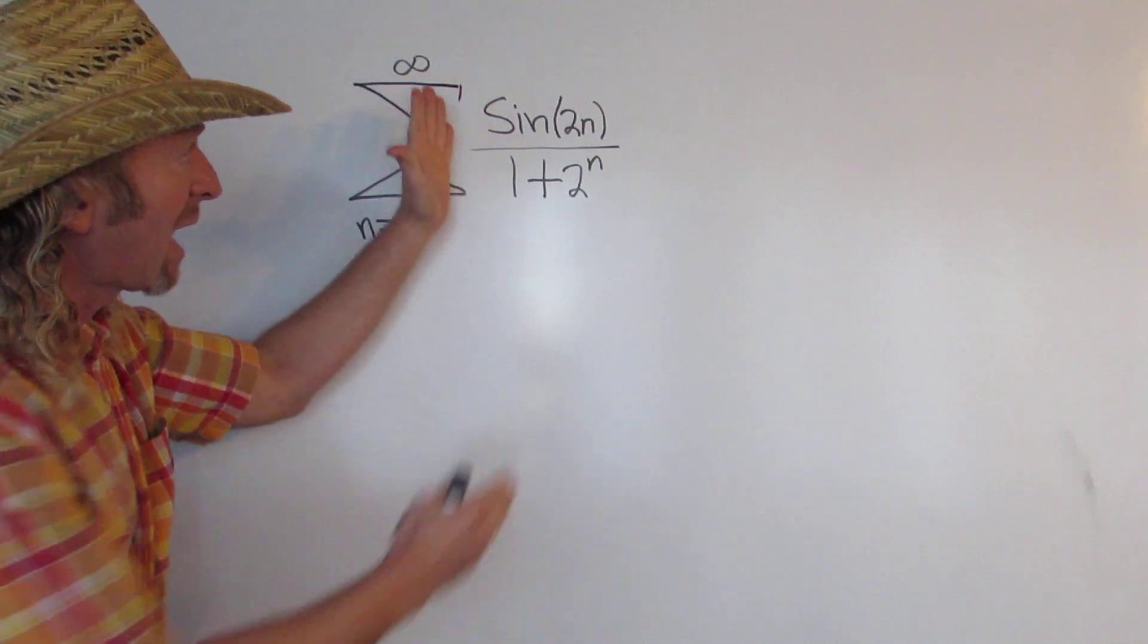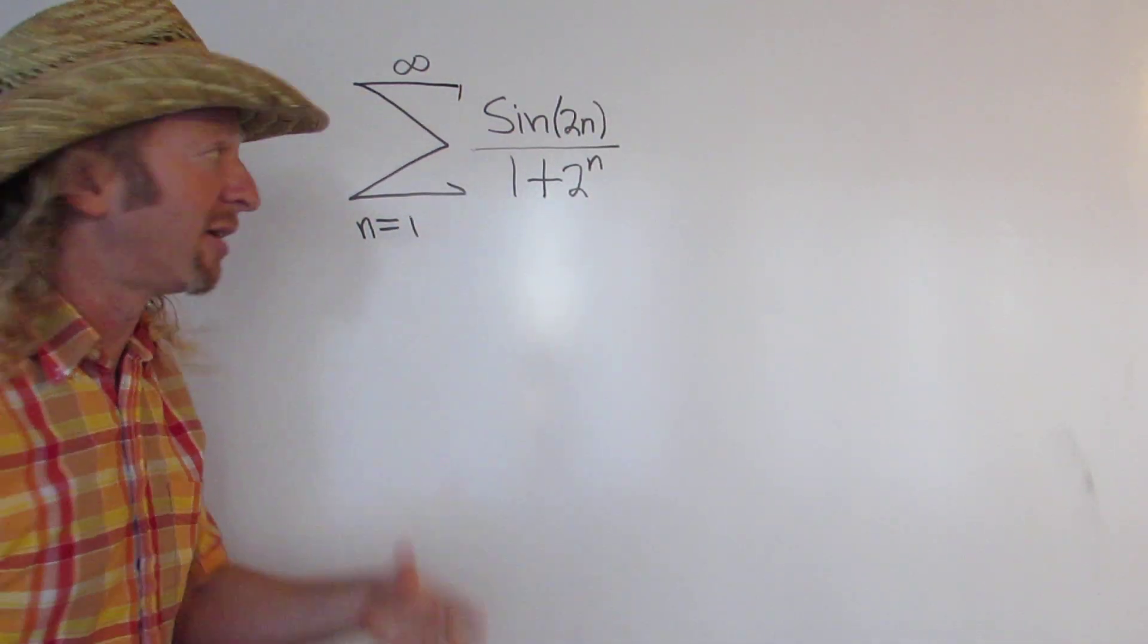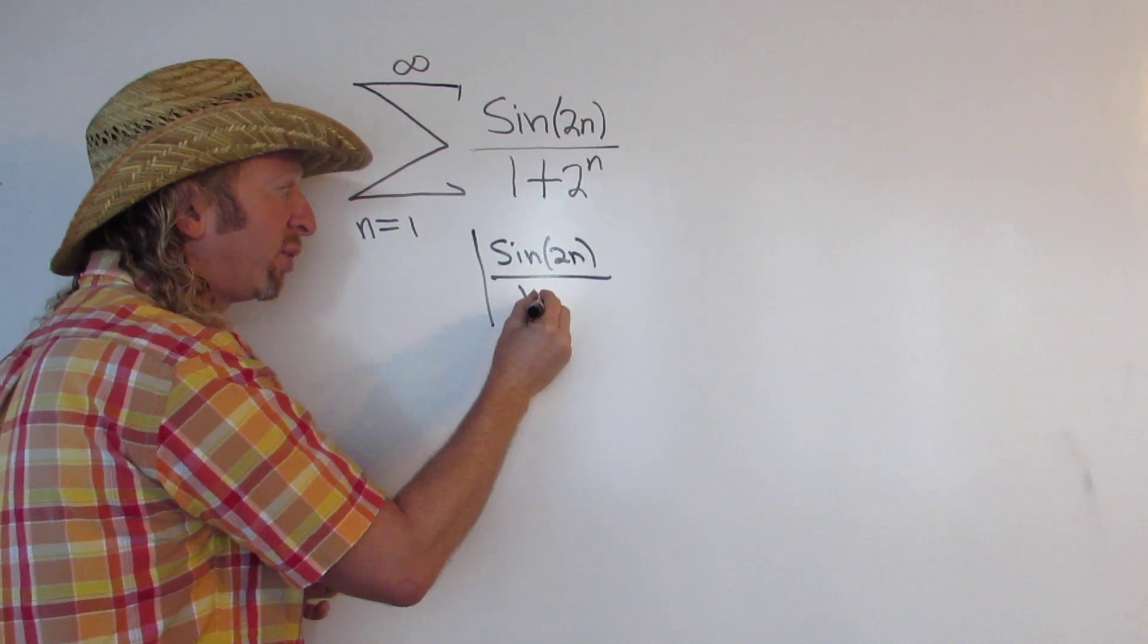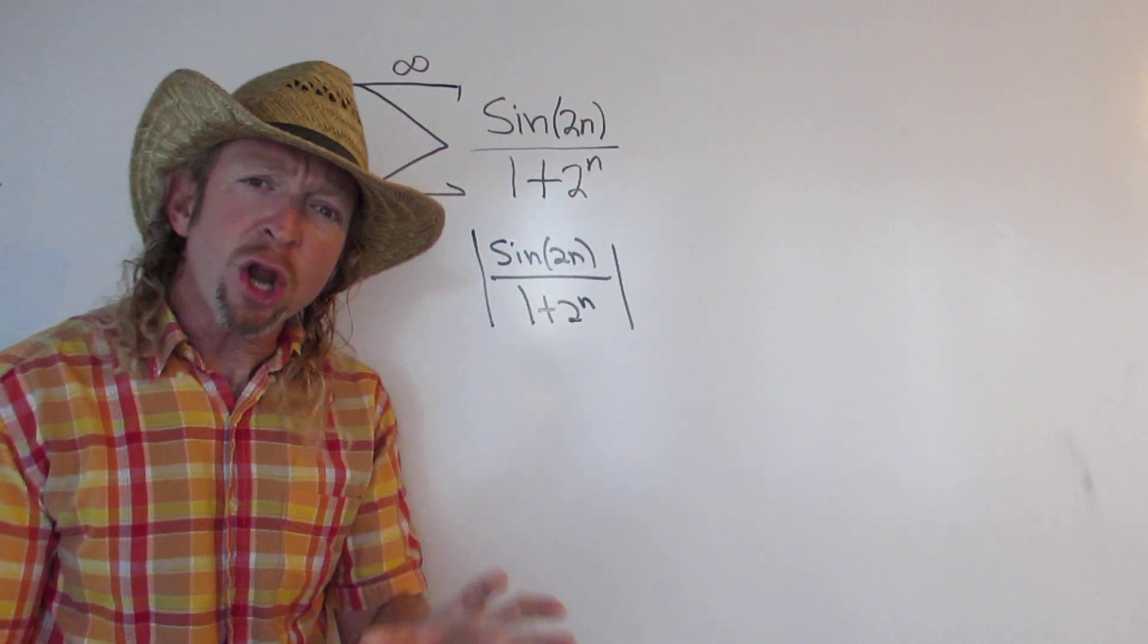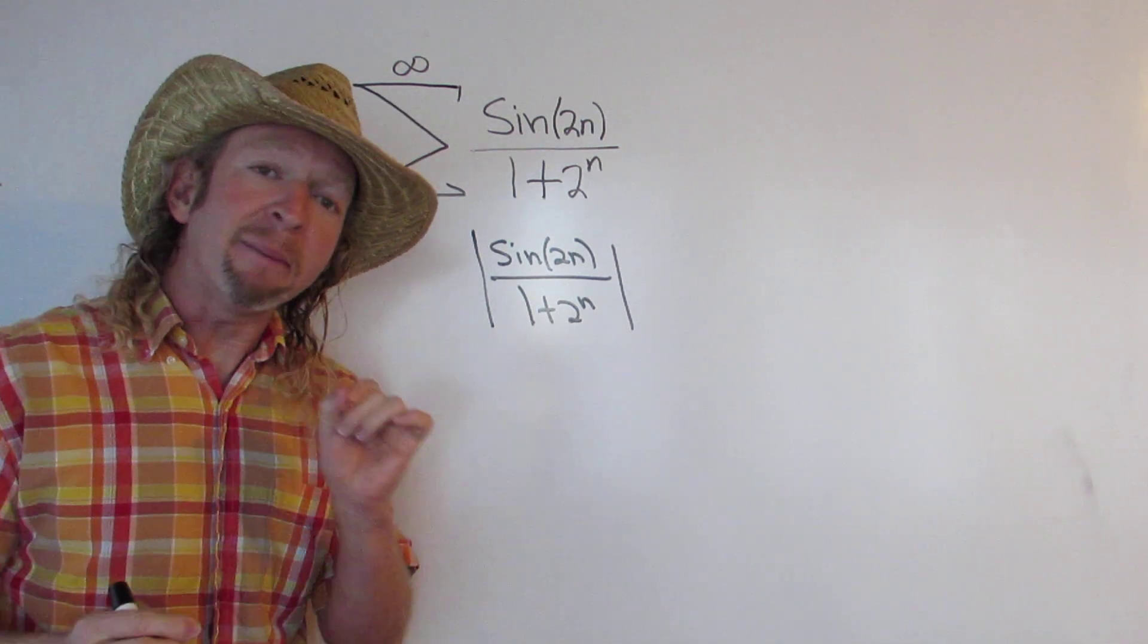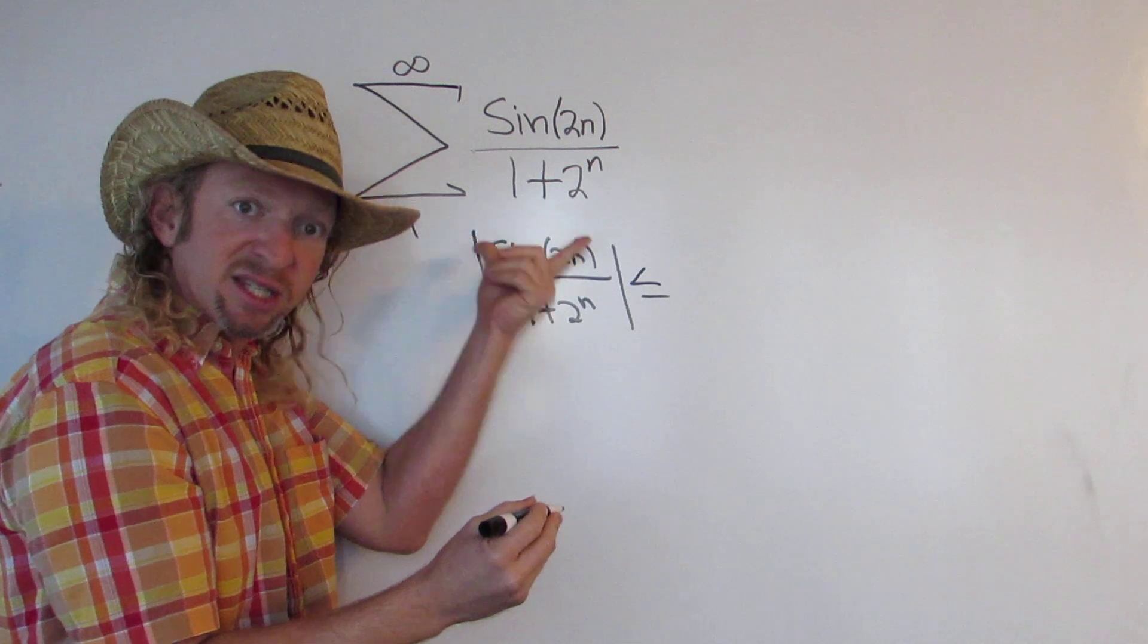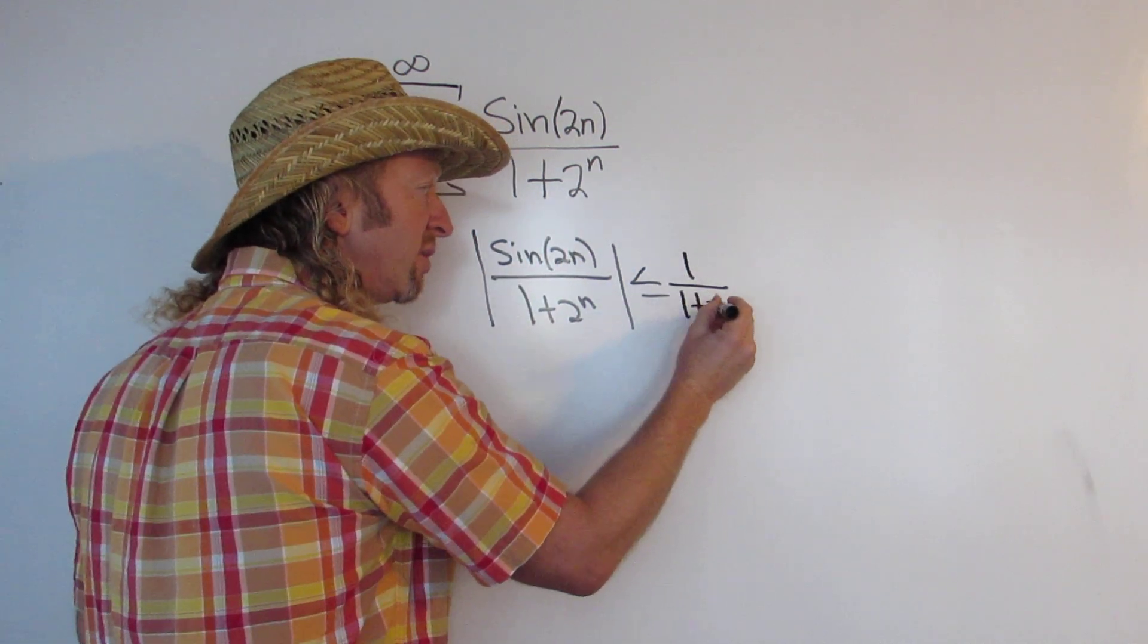Let's start by taking the absolute value of this and creating an inequality so we can use the direct comparison test. So we have the absolute value of sine of 2n over 1 plus 2 to the n. And again, we know the sine function is bounded by 1. That means that the absolute value of the sine function is less than 1. So this is less than or equal to, so we can just replace the sine with a 1, 1 over 1 plus 2 to the n.